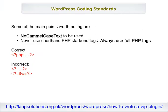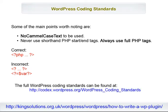First, a quick word about WordPress coding standards. WordPress is working to improve its coding standards by helping users maintain a consistent style so everyone's code can be clean and easy to read at a glance. The full WordPress coding standards can be found at the WordPress Codex.